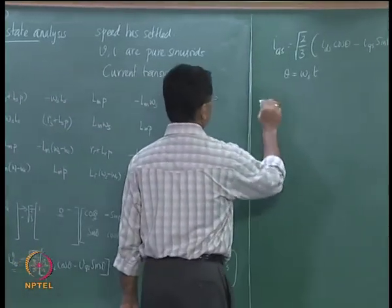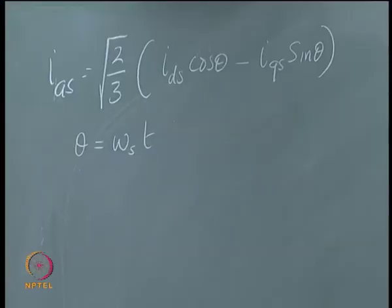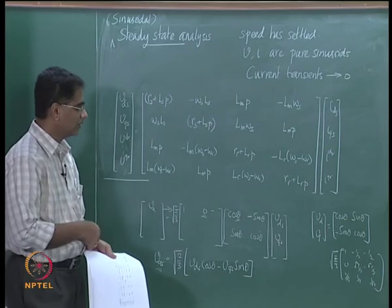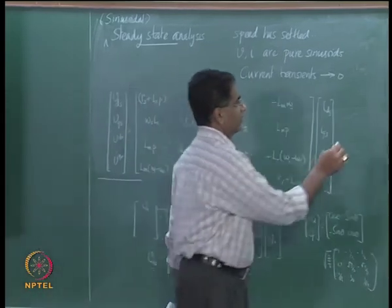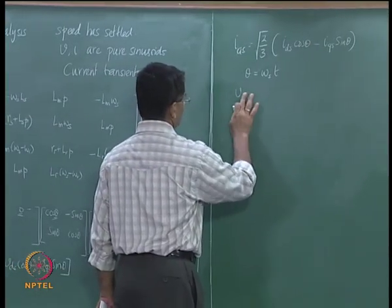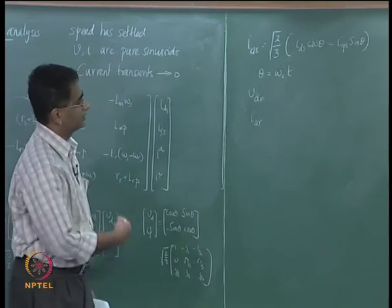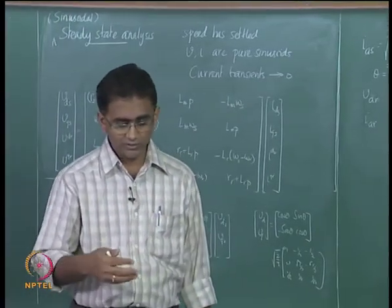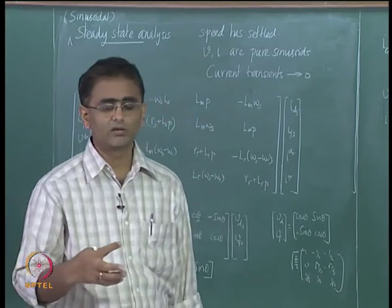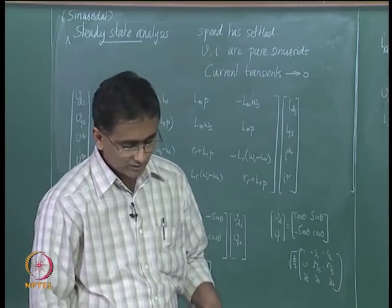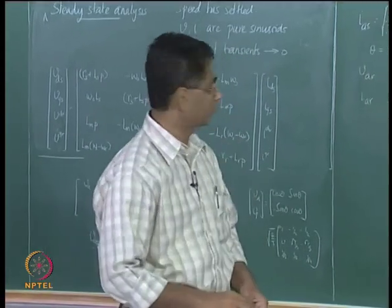Using this description, one can derive the steady-state equivalent of the induction machine. We have done this for the stator a-phase voltage and current; similarly one has to write down the expressions for v_ar and i_ar, and then process these to see whether we can derive an equivalent circuit representation for steady-state analysis. That part we will look at in the next lecture.